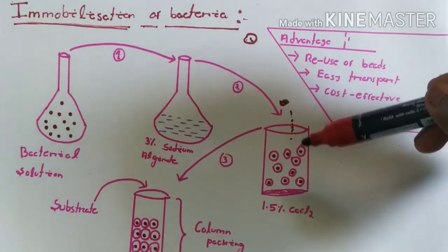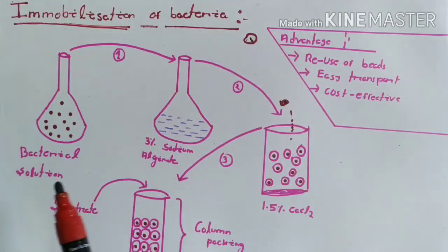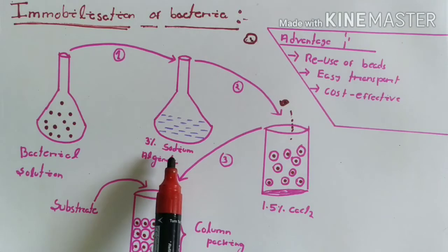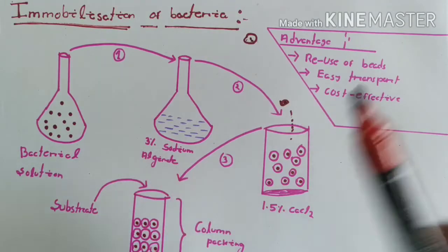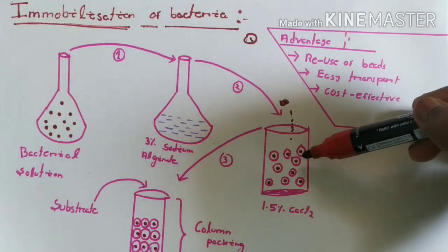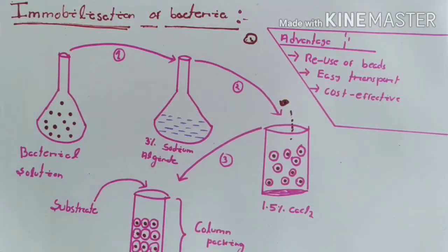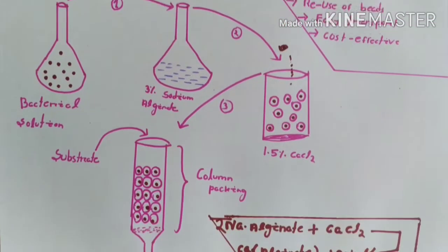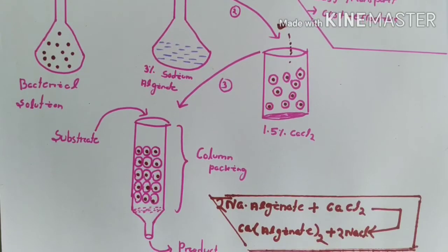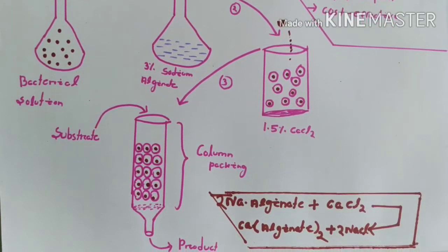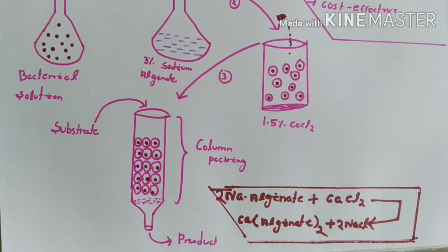And eventually, as the bacteria is mixed with the sodium alginate, the bacteria will be entrapped inside the bead. Now we can use these beads for our industrial purpose. We have to take these beads in a column.